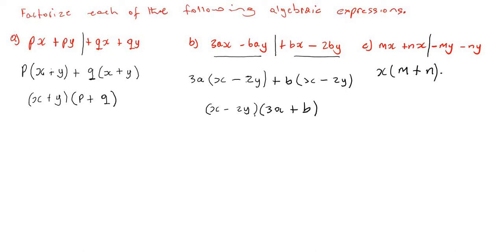We put back the minus sign. In the second pair we have −my and −ny, so y is common. We factor out a negative y: −my divided by −y gives positive m, and −ny divided by −y gives positive n. So the second pair gives −y(m + n).